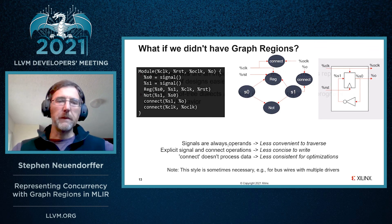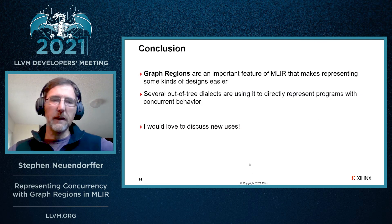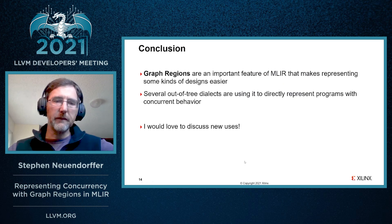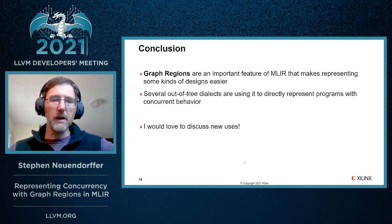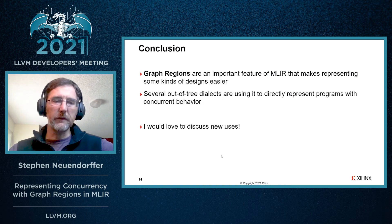In conclusion, graph regions are an important feature of MLIR, and they make representing many kinds of designs easier. Several out-of-tree dialects are used to represent programs with concurrent behavior. We'd love to hear from anybody else who's interested in using graph regions and talk about what your use cases are. Thanks.